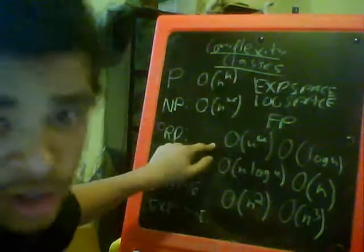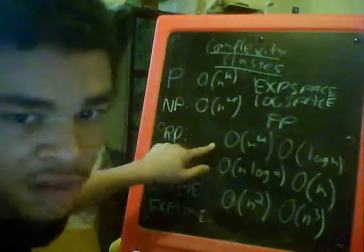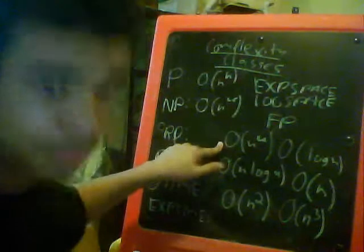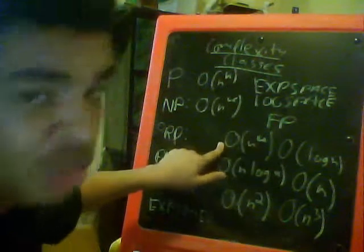And so here I've written down common bounds for complexity. You may be wondering what this big O means. For simplicity, for simplicity to say, we're just going to say on the order of.